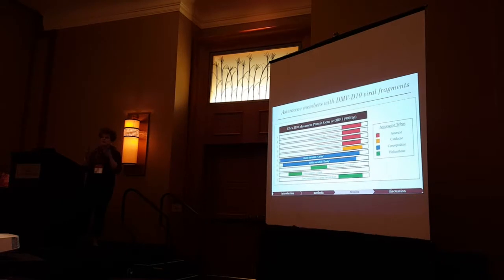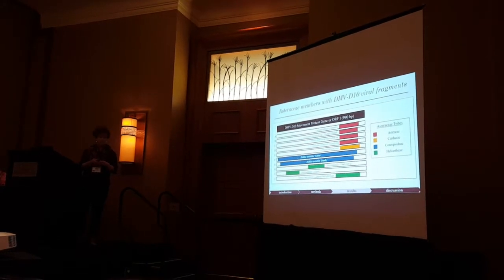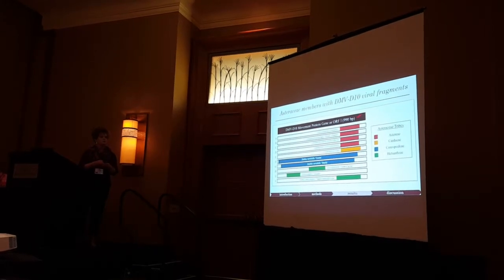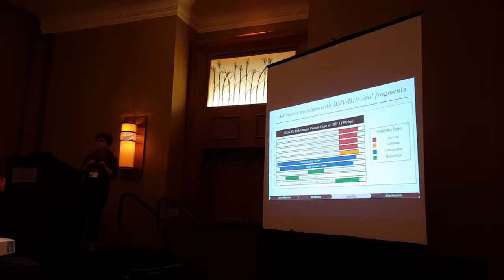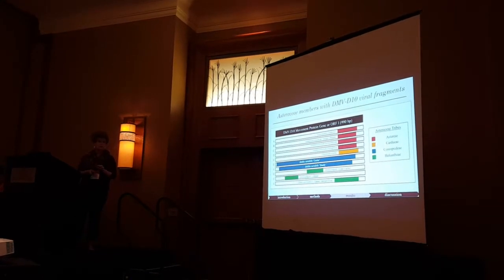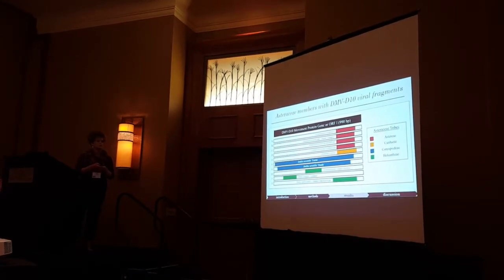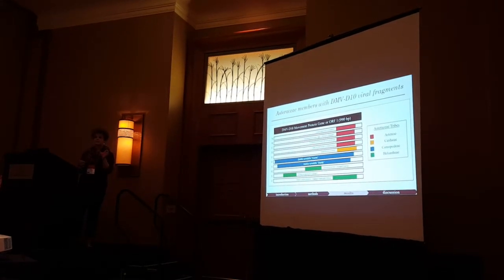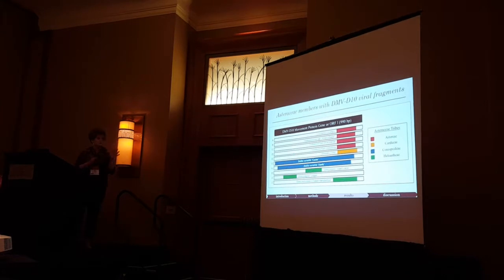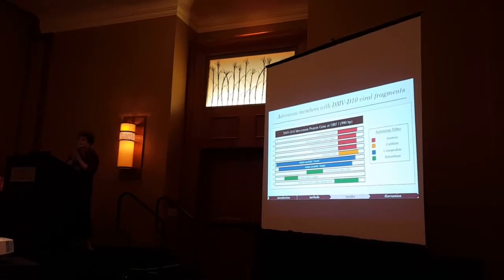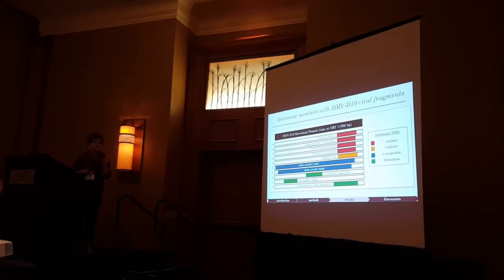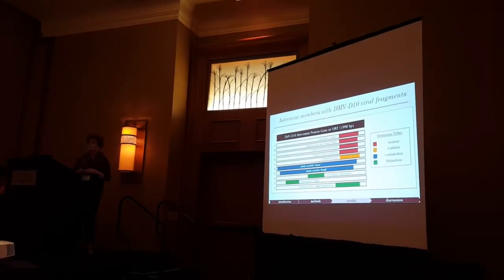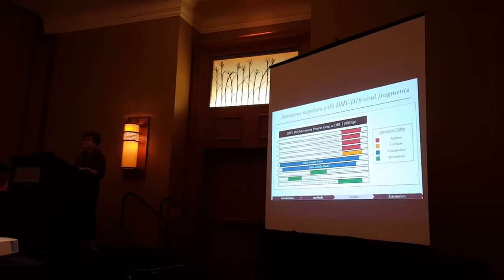Here's what we mean by viral fragments of DMVD-10. The movement protein gene is about 990 base pairs in length. Plant species A through J each showed viral fragments of DMVD-10, where the colored portions indicate nucleotide sequences matching particular portions of the movement protein gene. We were not seeing the whole movement protein gene in each plant species — only these little snippets, which we're calling viral fragments. The different colors indicate the Asteraceae tribes those plants belong to.